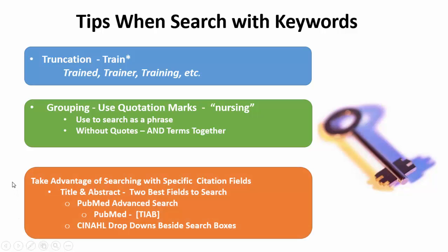Another thing to do is take advantage of searching with specific citation fields. The best fields to search, if you're trying to ensure your results are on your topic, are the title and the abstract. These are the two fields of a citation most likely to discuss the topic or subject of that particular paper. In PubMed, you can do this within the advanced search or by using the tag TIAB. In CINAHL, you'll need to use the drop-downs beside the search boxes to get it to search for that specific keyword within the citation fields. Using any of these strategies will give you a more focused search returning more meaningful results.